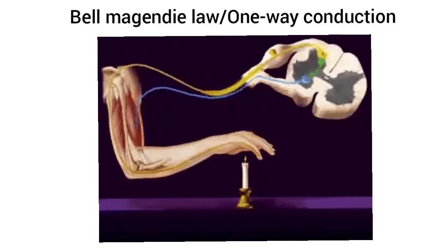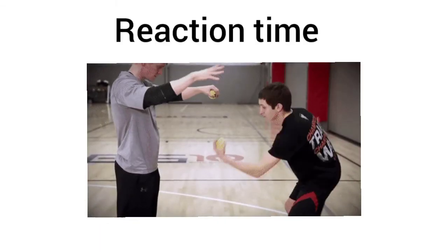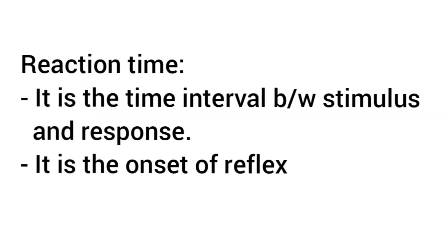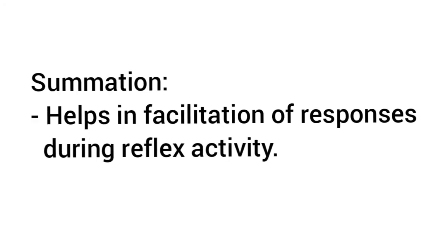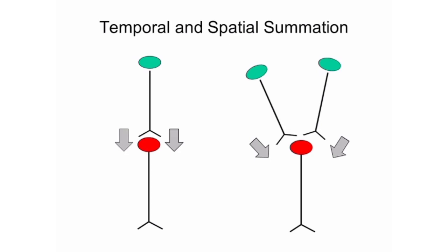Hello all, this video will continue with neurophysiology. Properties of Reflexes: The first one is the Bell-Magendie Law, which is also known as one-way conduction of impulse. Next one is Reaction Time — it is the time interval between the application of the stimulus and the response, that is the onset of reflex. Next one is Summation, which helps in facilitation of responses during reflex activity. There are two types: Spatial Summation and Temporal Summation, which have been discussed earlier.